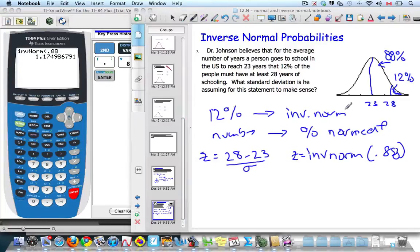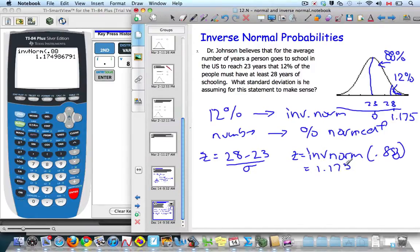So the corresponding Z-score here, if this is my Z-score of 0, this now is 1.175. So my Z-score for this problem is 1.175. I plug that in for Z.